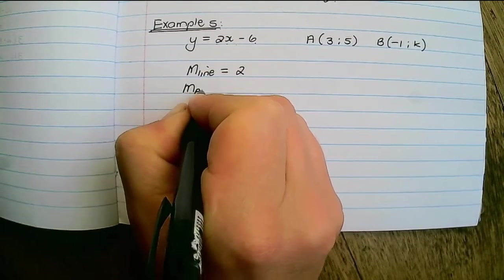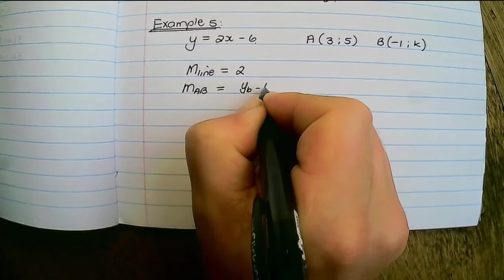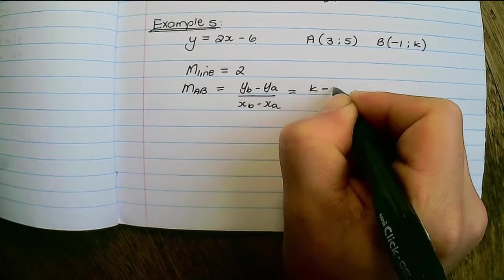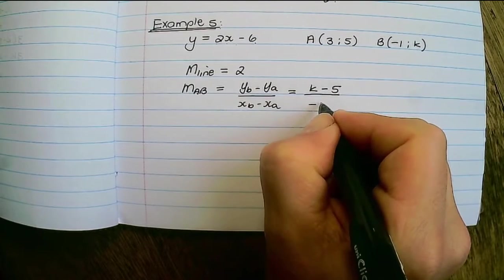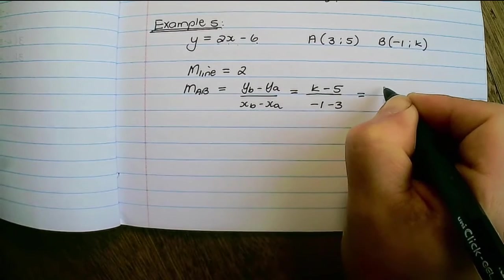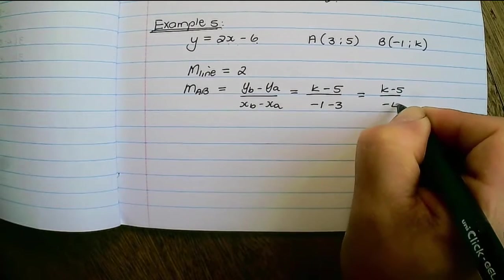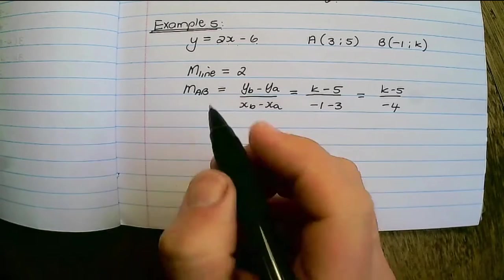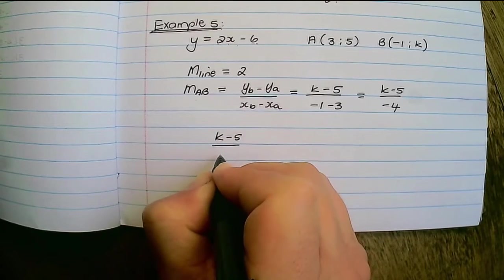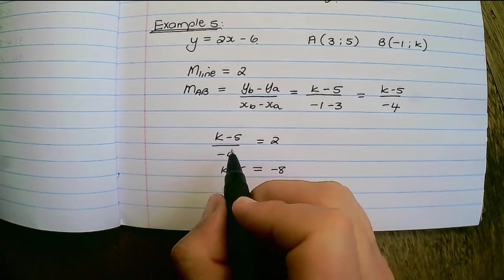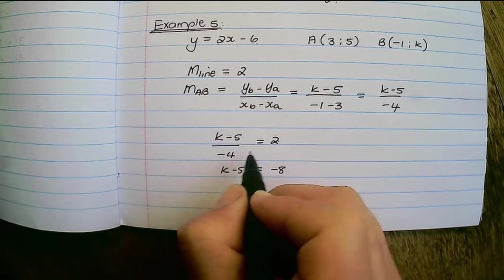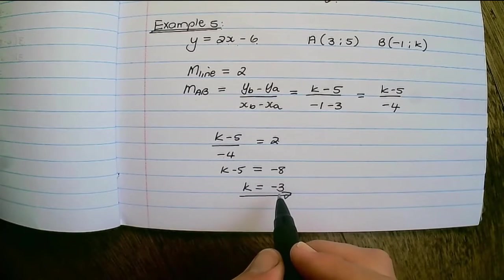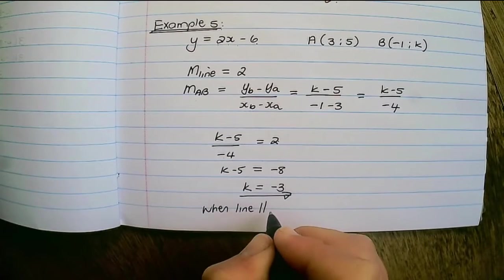Finding the gradient of AB: y of B minus y of A over x of B minus x of A gives k minus 5 over negative 1 minus 3, which becomes k minus 5 over negative 4. Setting this equal to 2 for parallel lines, we multiply 2 by negative 4 to clear the fraction and then move the 5 across, giving k equals negative 3.